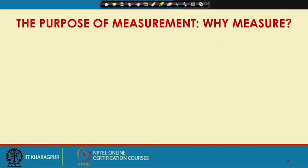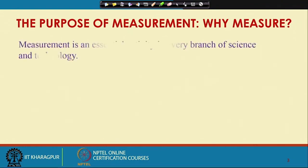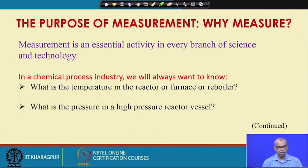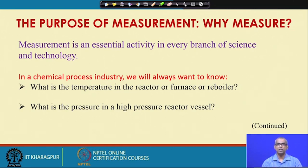What is the purpose of measurement? Measurement is an essential activity in every branch of science and technology. In a chemical process industry, you are always asking: what is the temperature in the reactor, at the furnace, or at the reboiler? What is the pressure in a high-pressure reactor vessel? It is important to know, because pressure must not exceed specified limits — otherwise we face a hazardous situation.